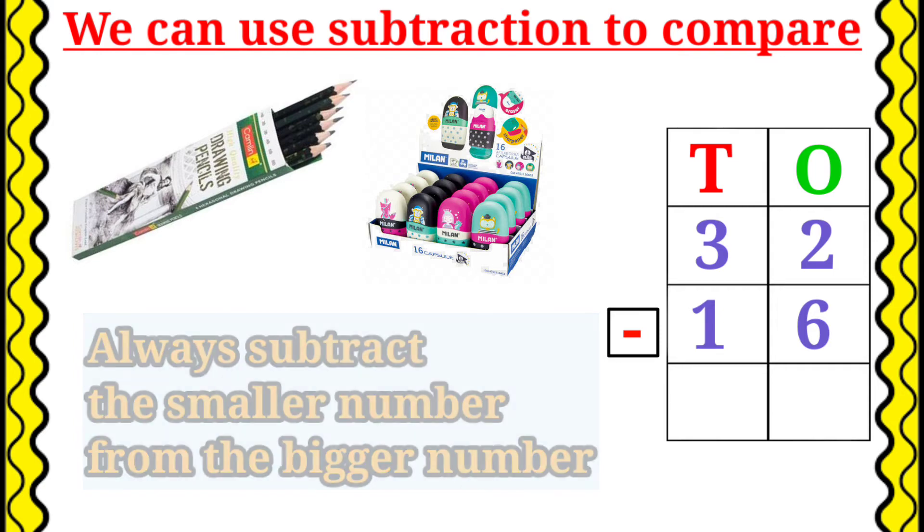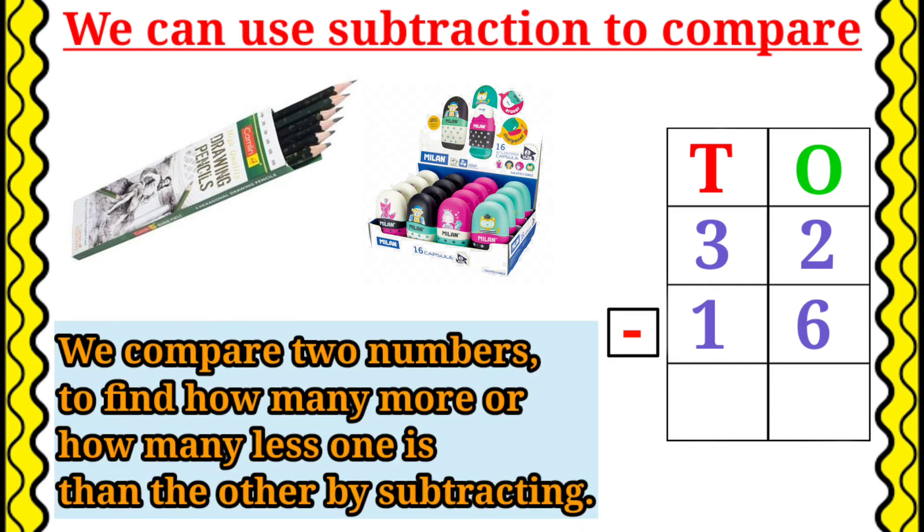And here we will write the subtraction sign. We know that we compare two numbers to find how many more or how many less one is than the other by subtracting. So, 32 minus 16 is equal to 12. Therefore, the answer is there are 12 pencils less than erasers.